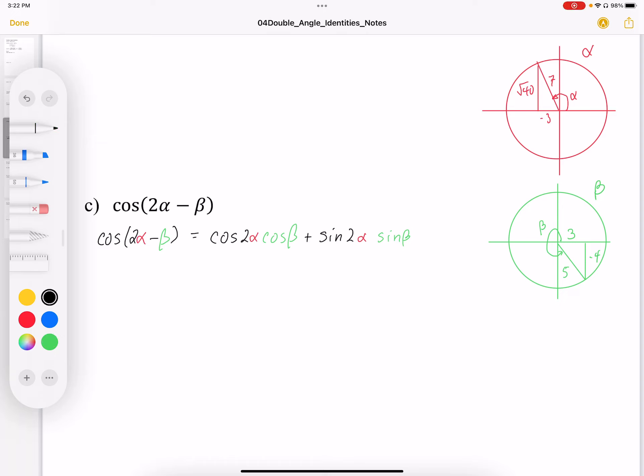This problem is similar to the previous one where we are going to apply a double angle identity with a sum or difference identity. So the first thing we're going to apply is that difference identity.